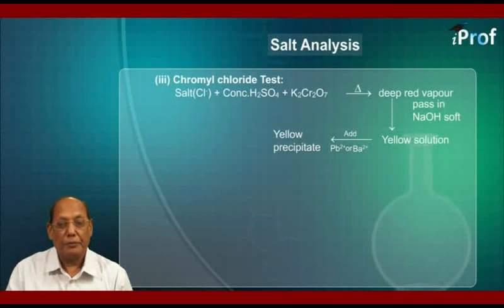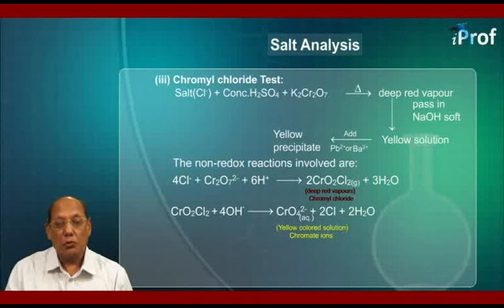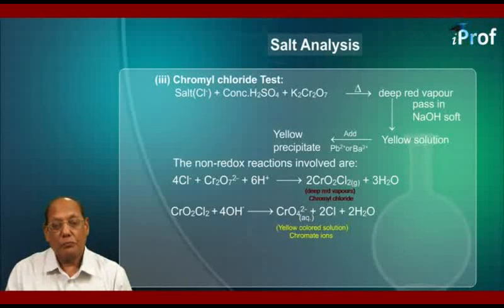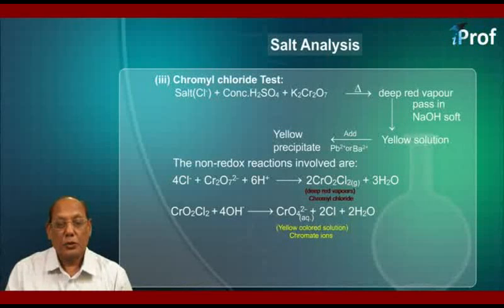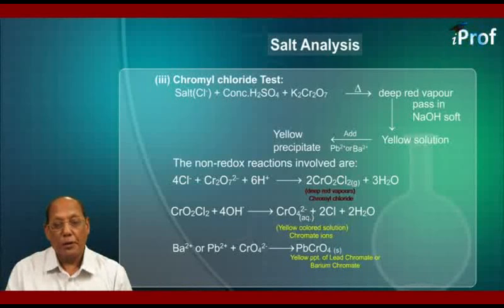The non-redox reactions involved are: 4Cl⁻ + Cr2O7²⁻ + 6H⁺ giving 2CrO2Cl2 gas + 3H2O. This CrO2Cl2 gas is the deep red vapor; its name is chromyl chloride. CrO2Cl2 reacts with OH⁻ to give a yellow-colored solution of chromate ions plus 2 chloride ions plus 2H2O. Finally, barium ions or lead ions react with chromate ions to give lead chromate or barium chromate, that is a yellow precipitate.